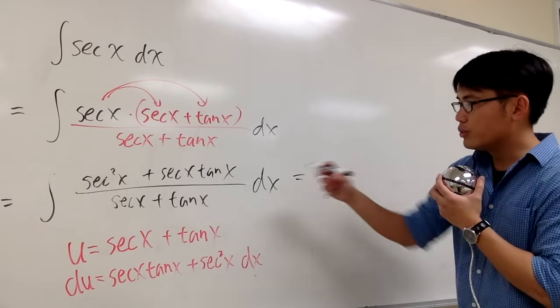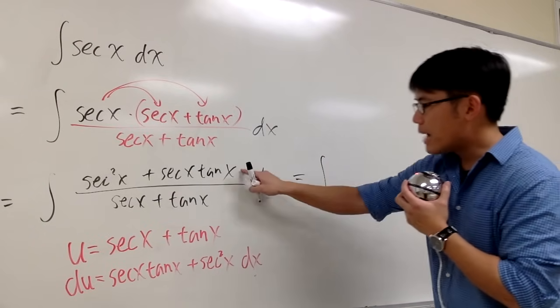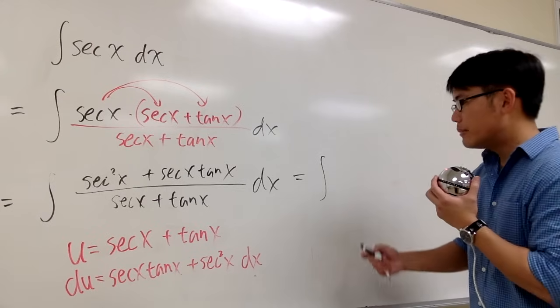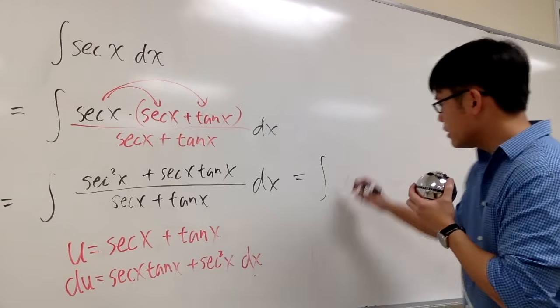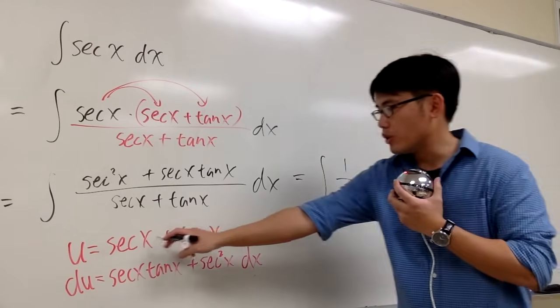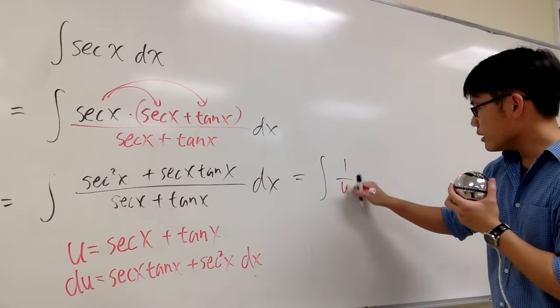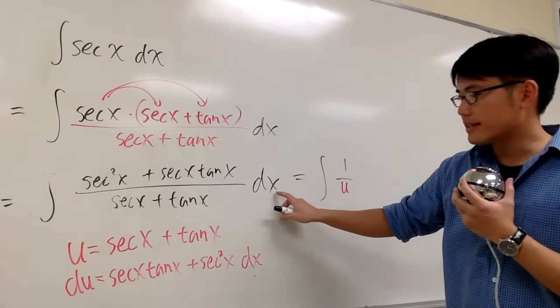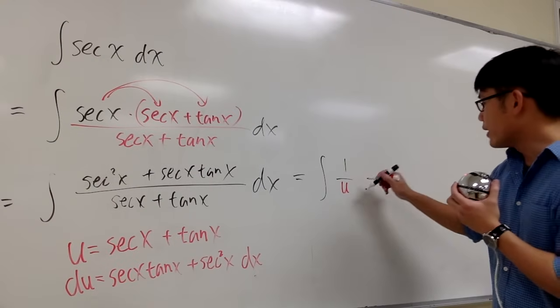So if you take this integral into the u world, the top and that will cancel each other out. And I'm just going to get 1 over the bottom, which is what I said to be u. And then if you just kind of match this form and the dx together, you can get du right away.